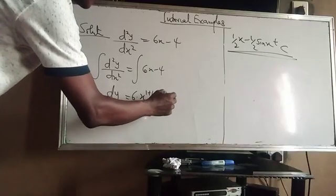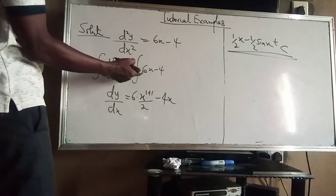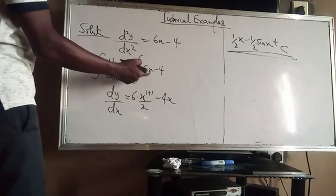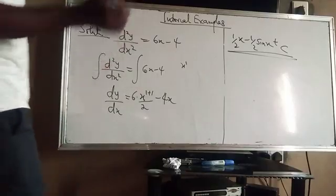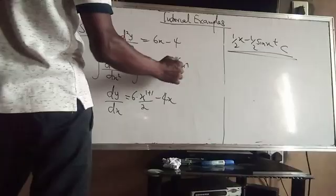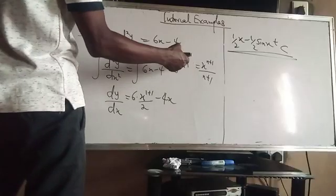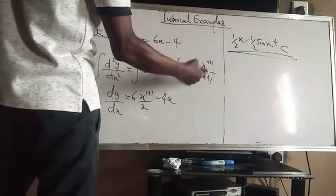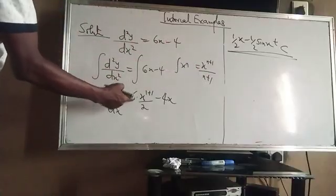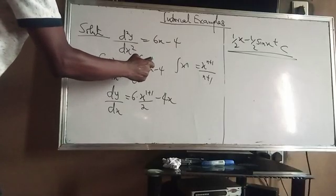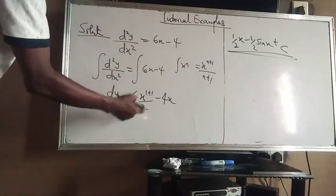The coefficient 6 is brought out. x is power 1, so we add 1 to the index: x^(1+1) all over (1+1), giving x²/2. Then minus 4 — since 4 is a constant, integrating gives 4x. So we have 6·(x²/2) minus 4x, which simplifies to 3x².